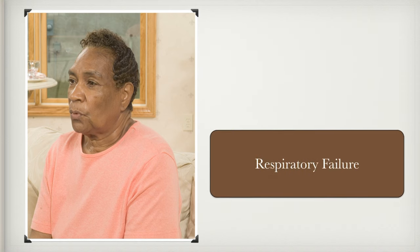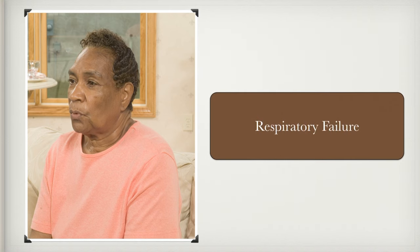Respiratory distress versus respiratory failure: respiratory distress means they're still getting enough oxygen in and CO2 out that the body can function. Respiratory failure means they're no longer able to get enough oxygen in and/or CO2 out — there's a problem with one or both gases. When the cells begin to switch over to anaerobic metabolism — 'an' meaning without, aerobic meaning air — then we have respiratory failure.